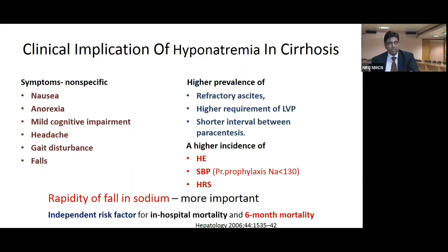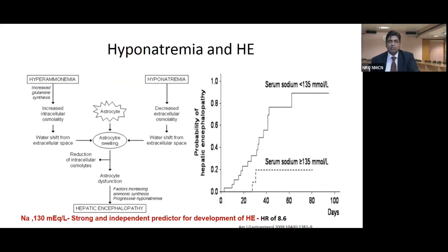Hyponatremia also causes non-specific symptoms including cognitive impairment, gait disturbances, nausea, and anorexia. The rapidity of fall in sodium is more important than the degree of fall, and it is an independent risk factor for in-hospital mortality and six-month mortality. Sodium less than 130 is strongly and independently linked with development of hepatic encephalopathy, with studies showing a hazard ratio of 8.6.